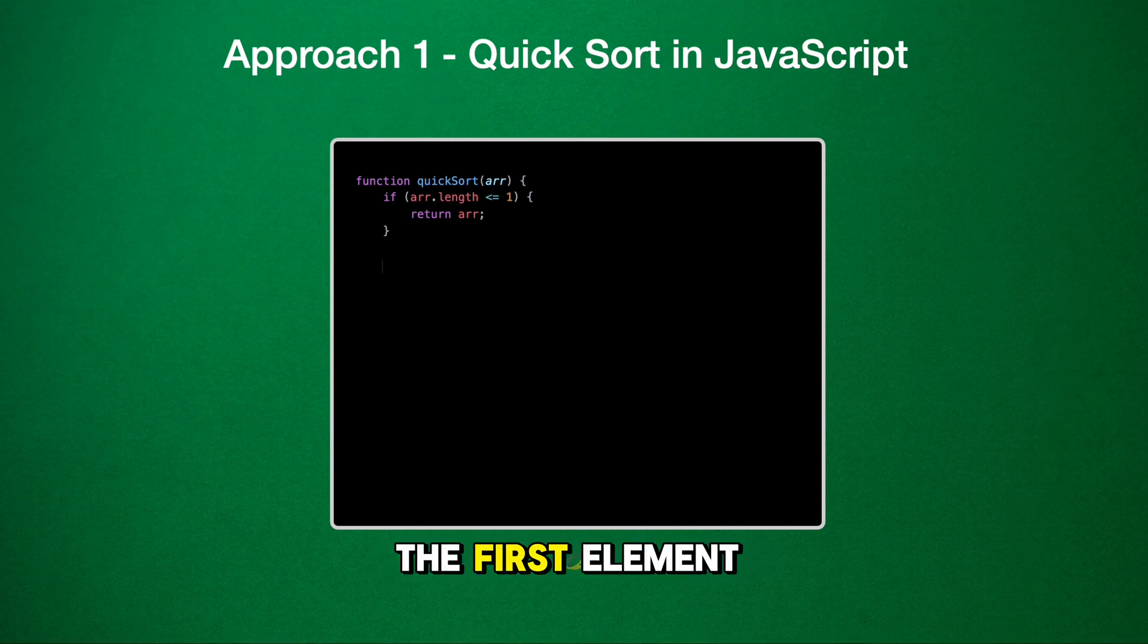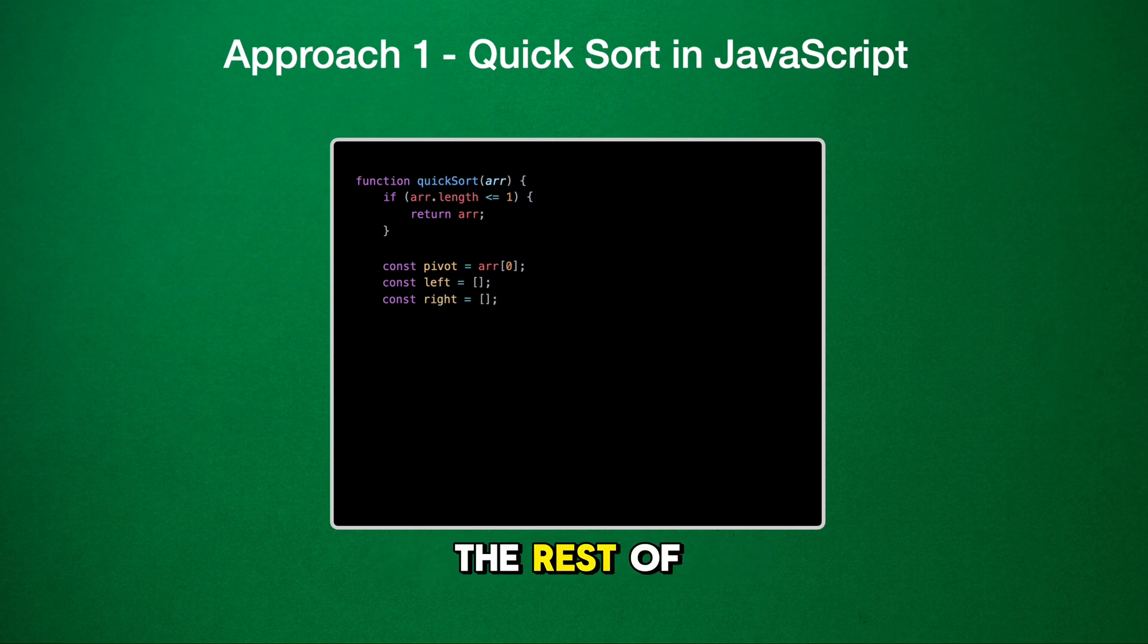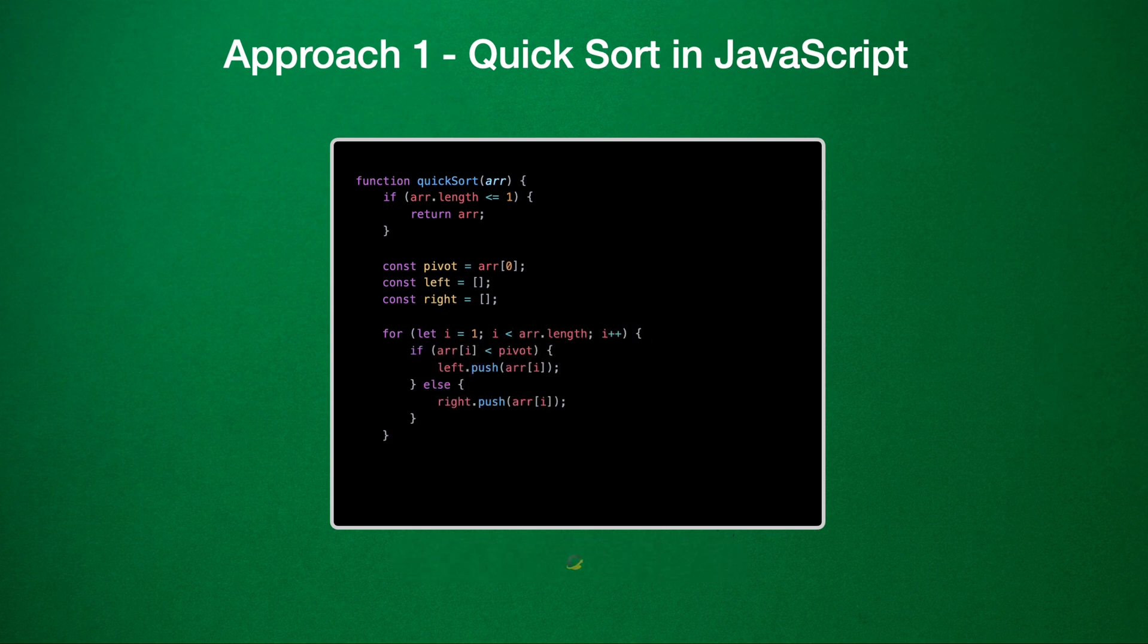We then choose the first element of the array as our pivot. Two empty arrays, left and right, are created to hold elements less than and greater than the pivot, respectively. We iterate through the rest of the array. Each element is compared to the pivot. If it's smaller, it goes into the left array. If it's larger or equal, it goes into the right array.